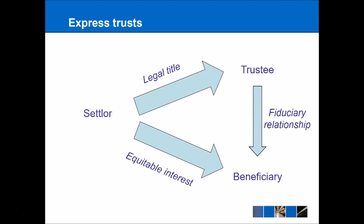We've got a diagram here which at first glance looks a little complicated, but hopefully we can explain it. We start off with the settler on the left-hand side — the person who ultimately owns the property in the first instance and decides to create the trust. When the settler creates the trust, we're splitting up ownership, coming back to that core idea of having more than one owner. We split it between the legal title that goes to the trustee and the equitable interest that goes to the beneficiary. There is a relationship between these two owners, and we talked about that being a fiduciary relationship. So we've got three key people here: the settler, the trustee, and the beneficiary.